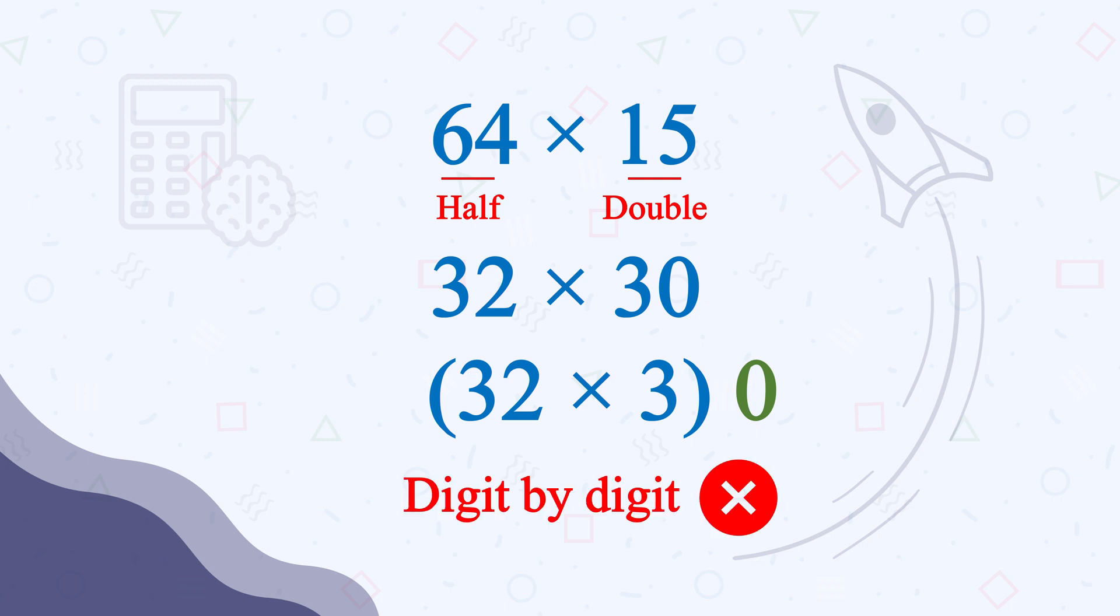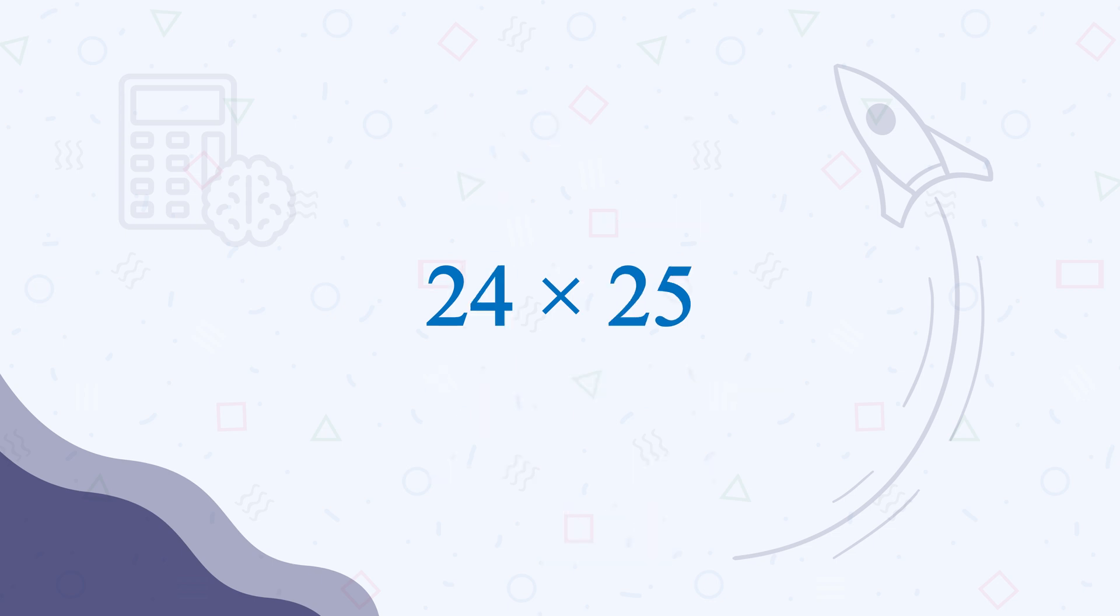All you need to do is find 3 times 32 and then put a 0 at the end. Now don't multiply digit by digit. Calculate it in your mind: 3 times 30 is 90, and 3 times 2 is 6, so 3 times 32 will be 96. And let's add a 0 at the end; it will be 960, the product of 64 times 15. Look how easy the method is; you just need to practice it a lot. Let's see one more: 24 times 25.